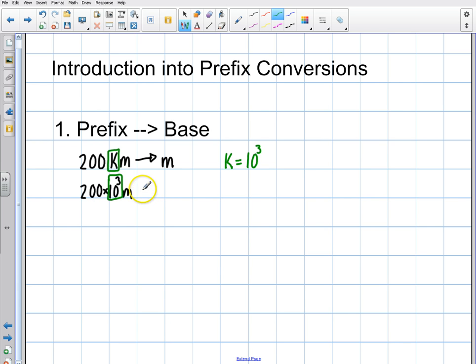Now you might want to take that a step further. You can do a couple of things. You can say 200,000 meters. It's one way. Or maybe you want to do it 2 times 10 to the 5 meters in scientific notation. It's the same thing. But the initial step is just this. It's pretty quick.